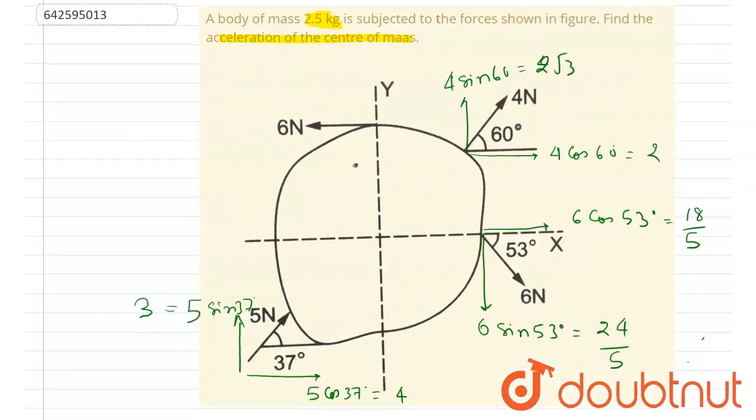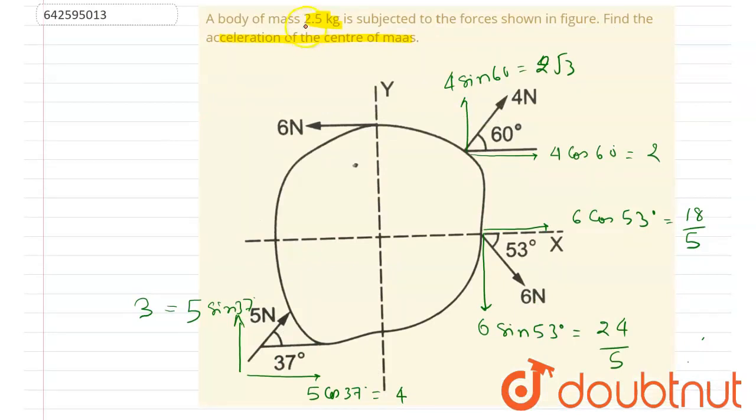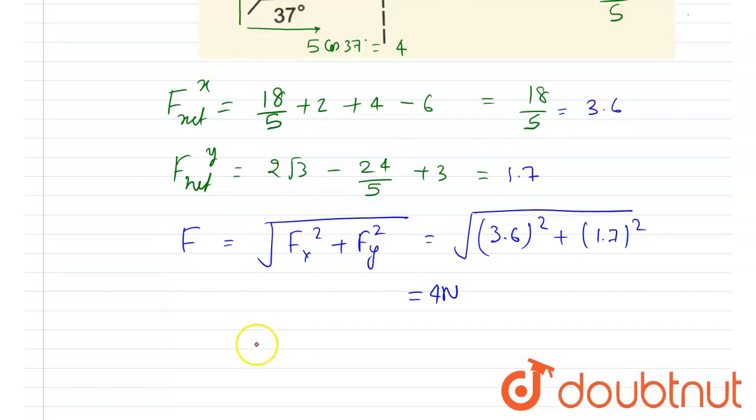So if you see the question, in the question it is asked that the acceleration of the center of mass is what? So here the mass is 2.5, right? And we know the net force, right? So just divide the two. So I will write acceleration of the center of mass is equal to 4 by 2.5, is 5 by 2, right? So it will be 8 by 5, and that is 1.6 meter per second square, and this will be your answer.